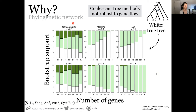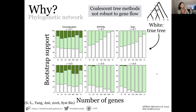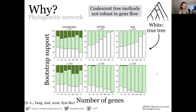We compared three methods: concatenation, ASTRAL, and NJST. Concatenation performed poorly in both scenarios, so I won't discuss it further. ASTRAL and NJST are both coalescent-based methods where you first go from sequences to gene trees, then from gene trees to a species tree. Performance depends on the value of gamma — the top row corresponds to simulated data when gamma equals 0.1, meaning 10% of genes get transferred through the gene flow event, and the bottom row corresponds to gamma equals 0.3, a larger proportion.